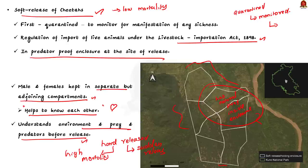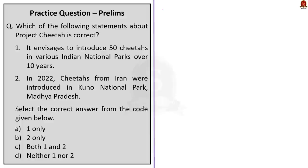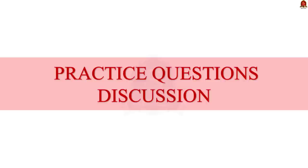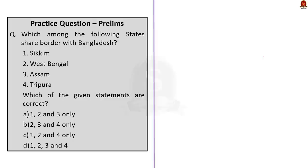So two more cheetahs have been moved to a larger enclosure from the quarantine enclosure. Be clear about what is reintroduction versus introduction, what is done under Project Cheetah, and the terms soft release and hard release — knowing this much is sufficient for preliminary-type questions. Today we have five questions, with three to be discussed and two as quiz questions for you. Those two quiz questions are also clearly addressed in the news article discussions — if you keenly observed, it will be easy to answer them. Post your answers in the comment section.